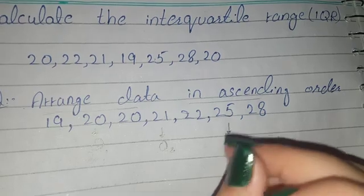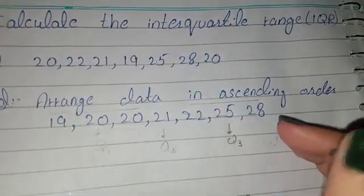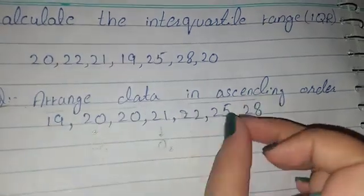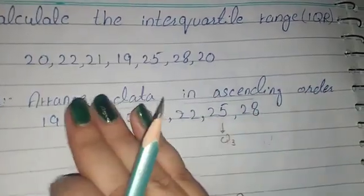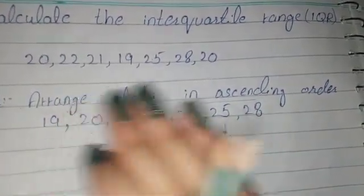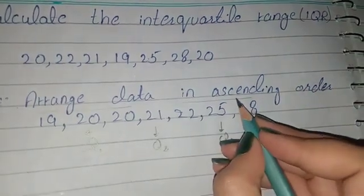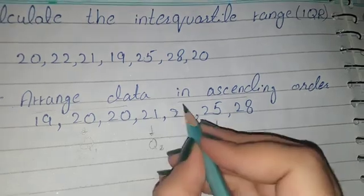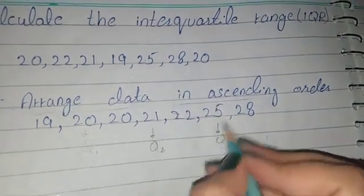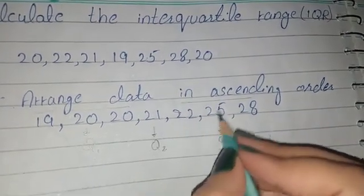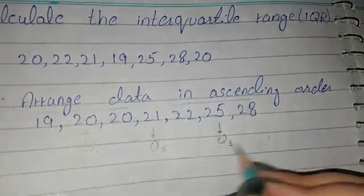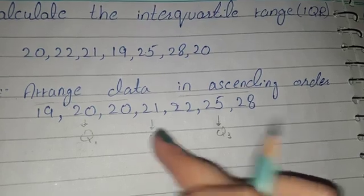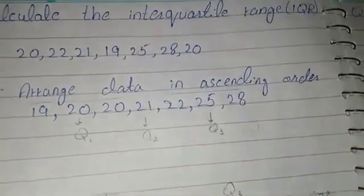We do the same for the right side — looking only at the three values there. We underline and find the middle value, which is 25. So 25 is Q3. To summarize: Q1 is 20, Q2 is 21, and Q3 is 25.